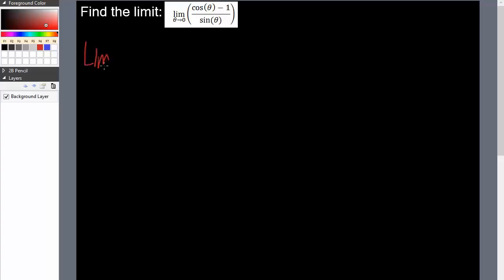Limit theta is going to approach 0. And for questions like these, if we insert 0 straight in, we will get cosine 0 is 1, 1 minus 1 is 0, sine 0 is 0, so 0 divided by 0. You can't divide by 0, so this method does not work.